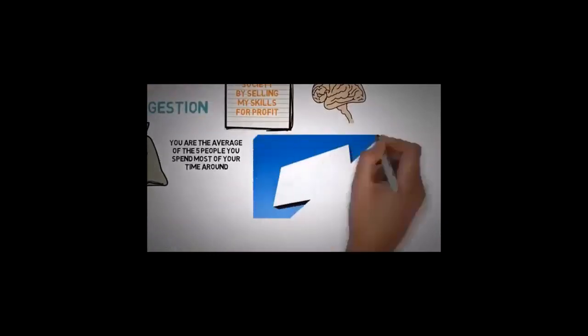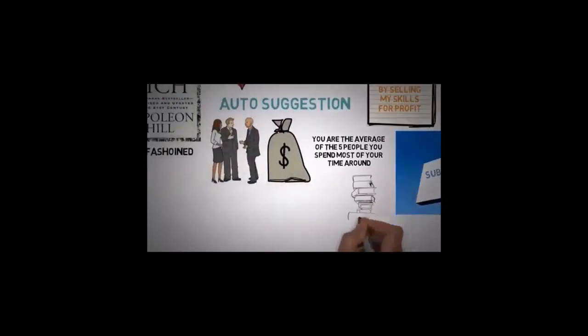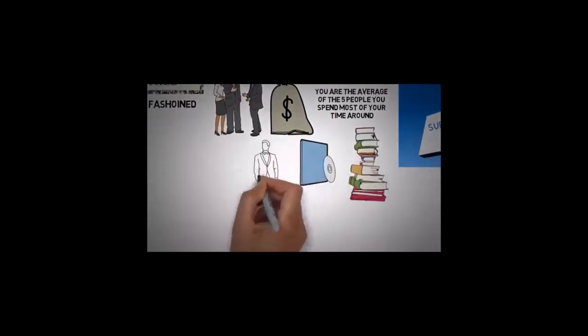So principle number two is auto-suggestion. Put yourself in places that you will become profitable and feed your mind with books and knowledge and reading and videos and people that are going to make you stronger and work harder. And they're going to push you to grow rich.